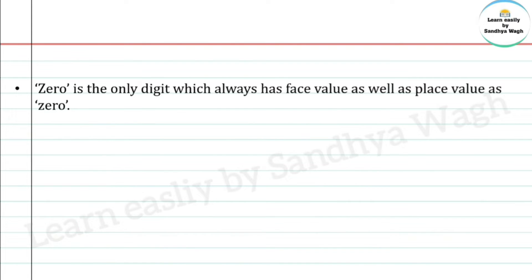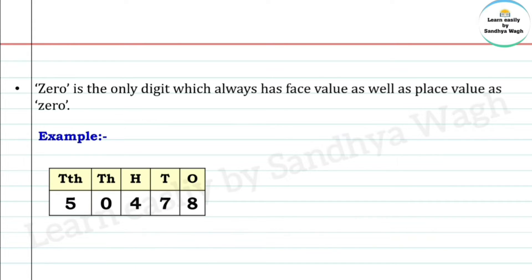Zero is the only digit which always has both face value and place value as 0. For example, in the number 50,478, the face value of 0 is 0 — because the face value of any digit is the digit itself. And the place value of this 0 is also 0.